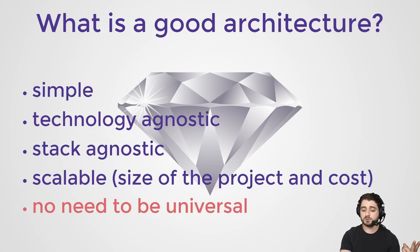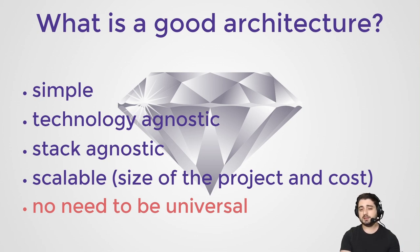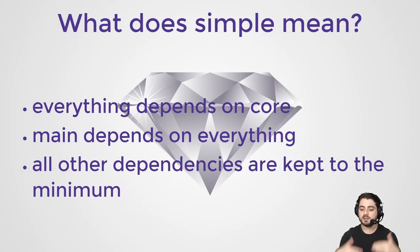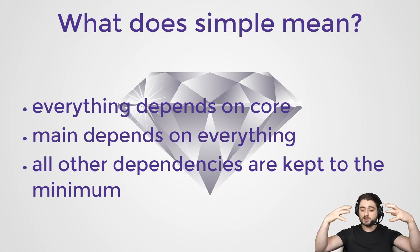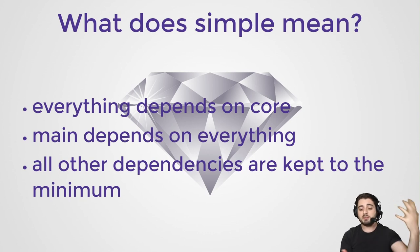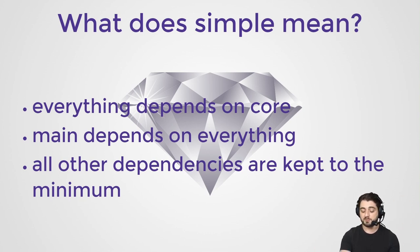What is a good architecture? It should be simple, technology agnostic, stack agnostic, and scalable in terms of the size of the project and cost. It doesn't need to be universal — it doesn't need to be applicable for games or embedded design. What does simple mean? Everything depends on the core. Core is at the top with minimal dependencies. Main depends on everything, so it's at the apex of the diamond. All other dependencies are capped to the minimum.